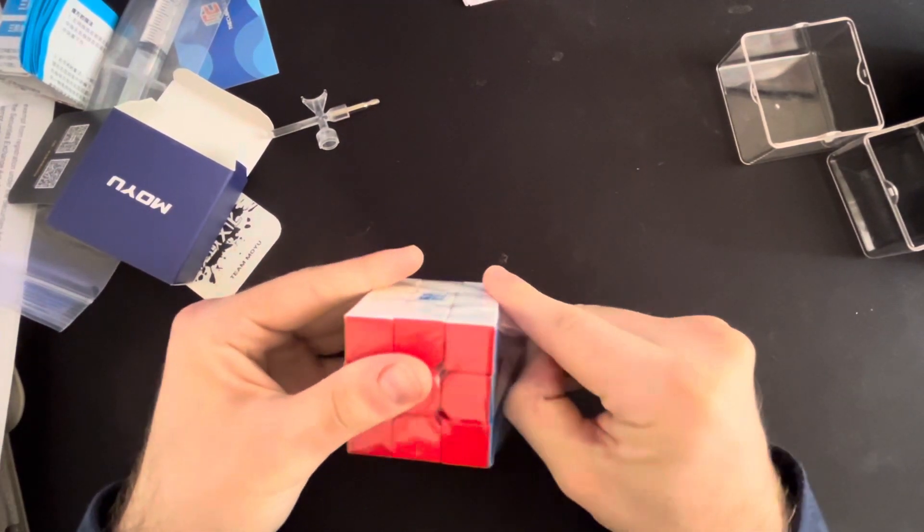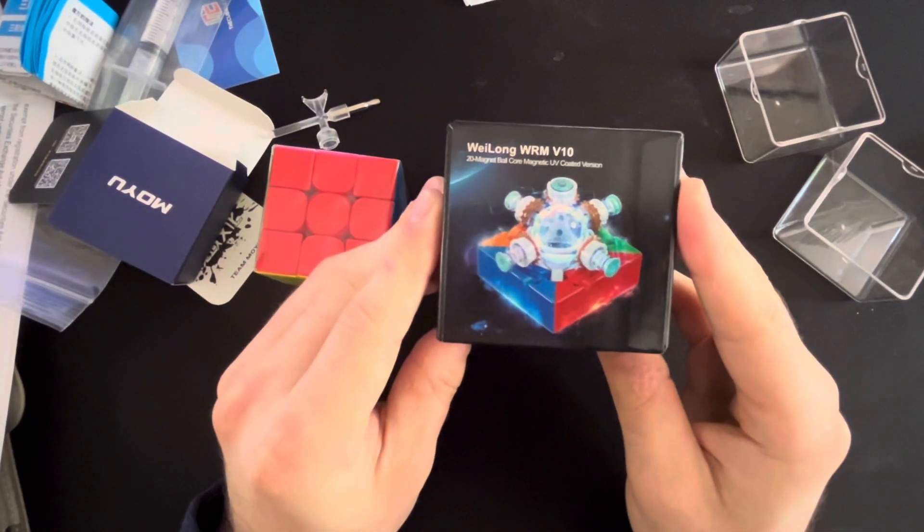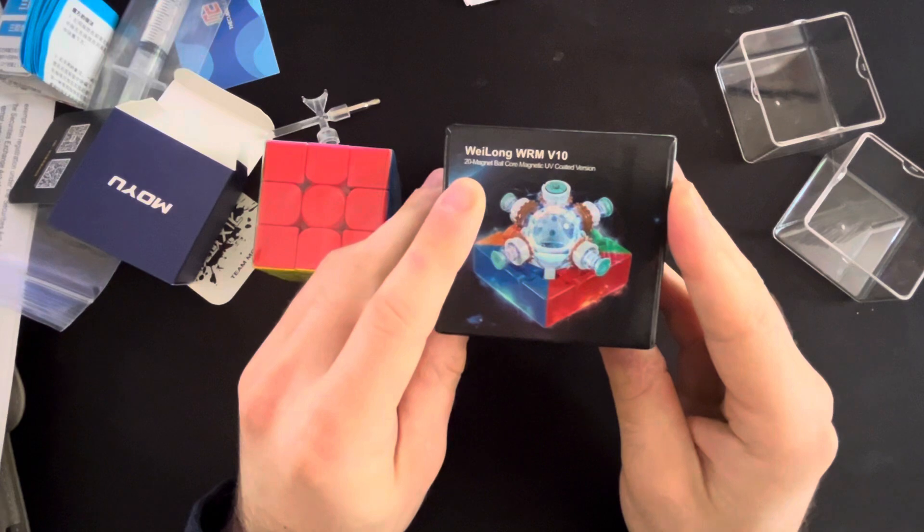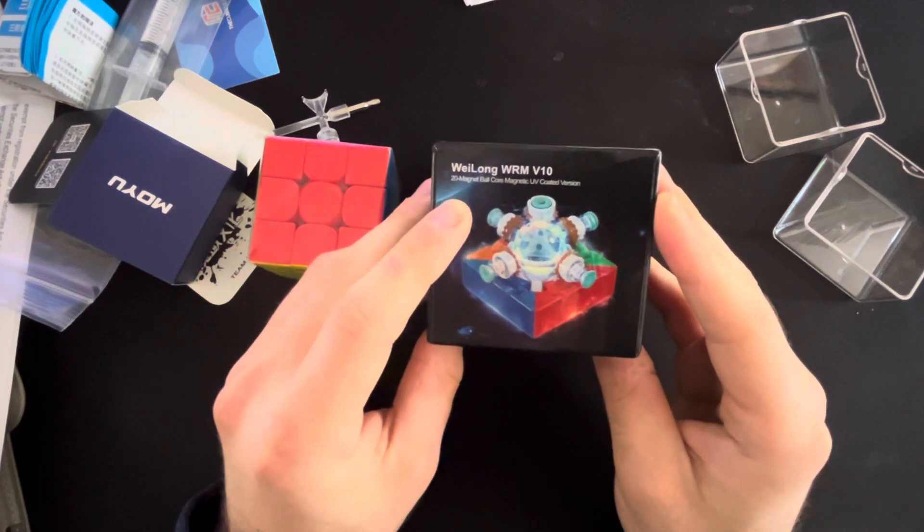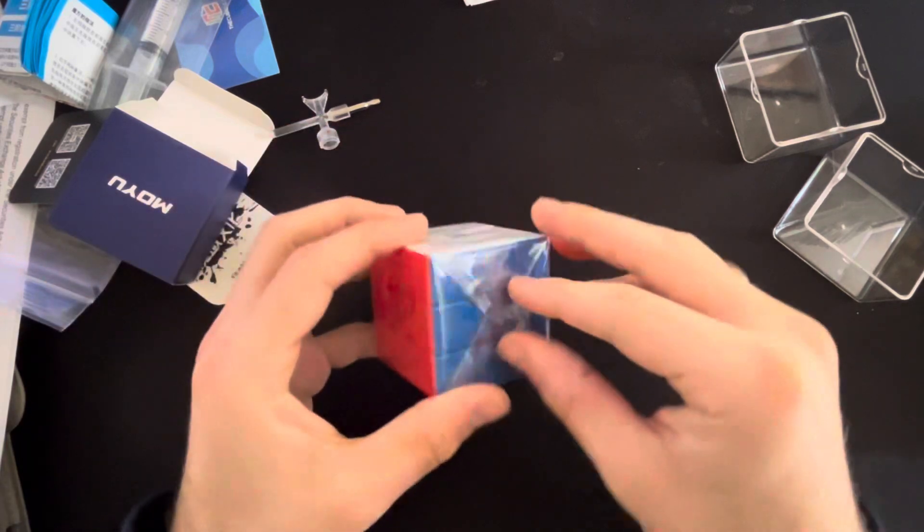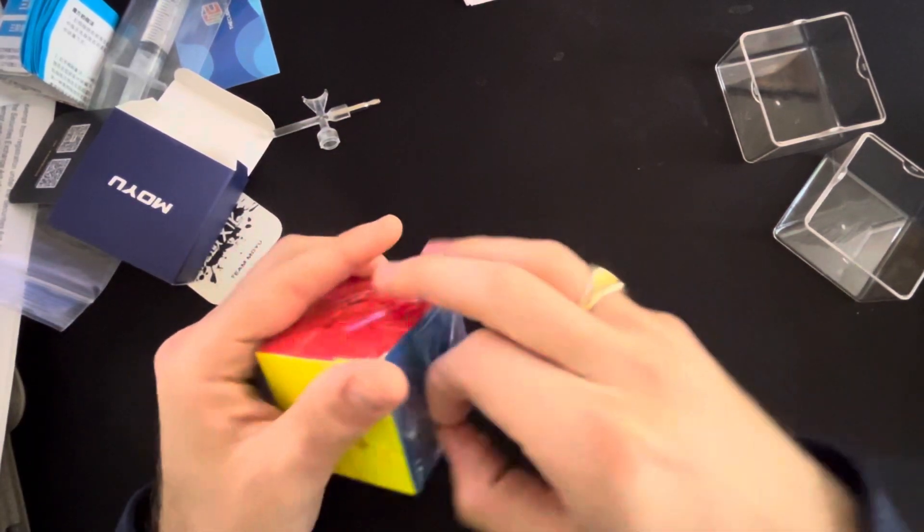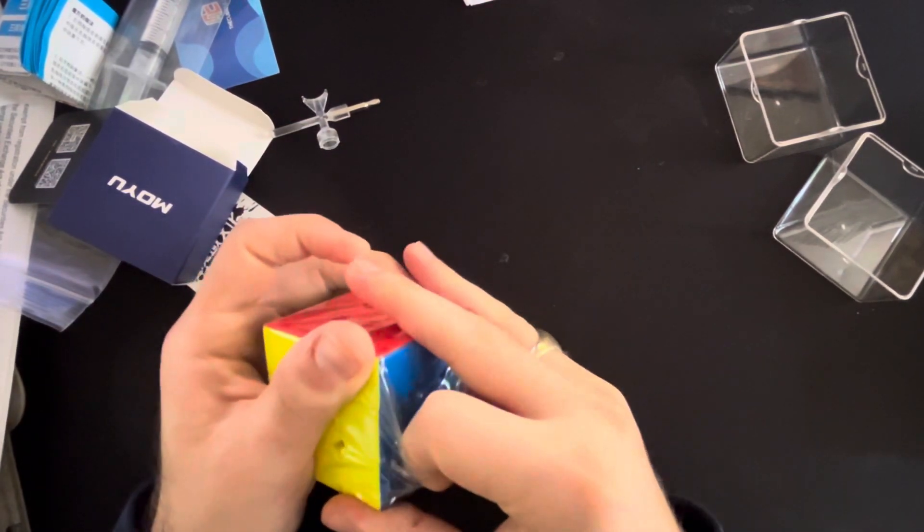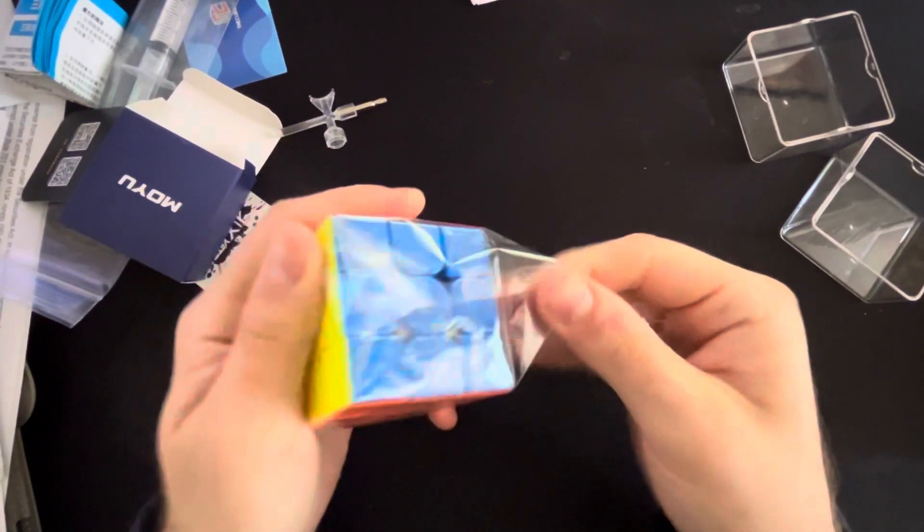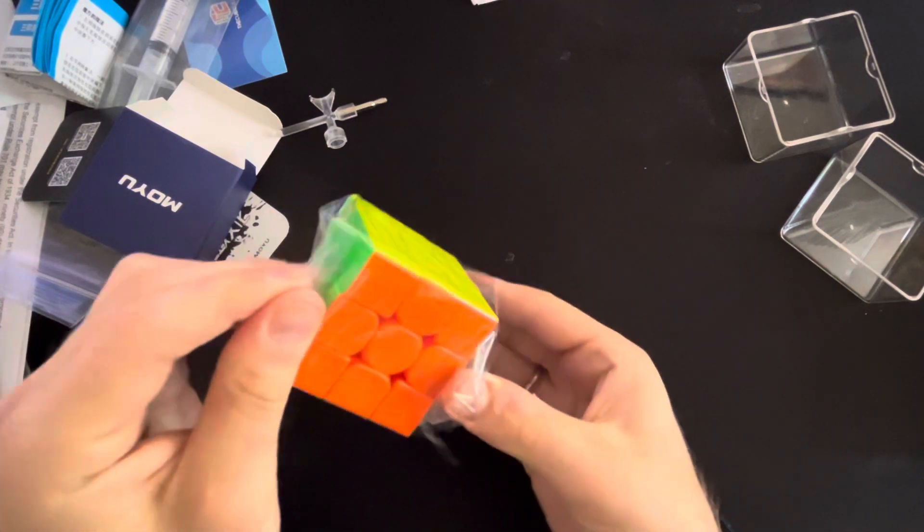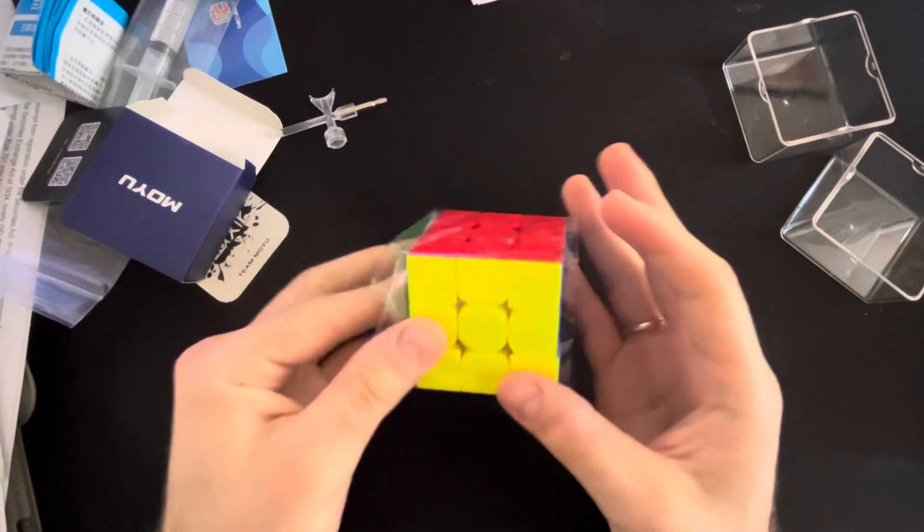So this one doesn't have maglev. It's the 20 magnet ball core magnetic with UV coating. So I know that I typically don't like super fast cubes. I heard from a co-worker that maglev is super fast. So I didn't want to do that.